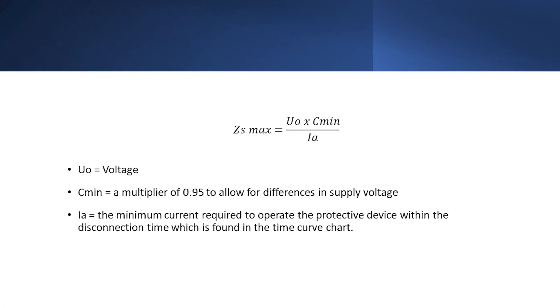Looking in appendix 3 of BS7671, we can see the calculation which shows how the maximum ZS values are calculated. We multiply the voltage by the C min factor of 0.95 and divide by Ia, which is the minimum current required to operate the protective device within the disconnection time.